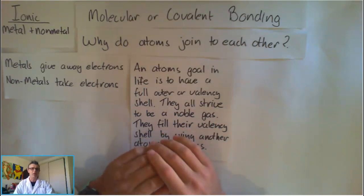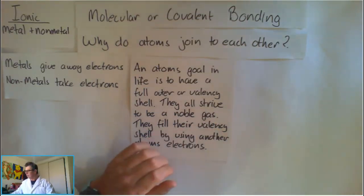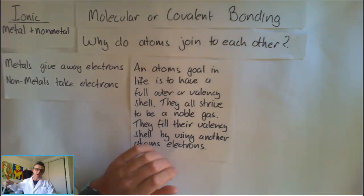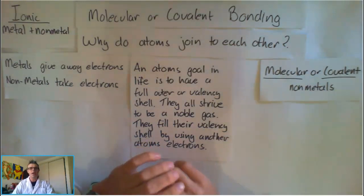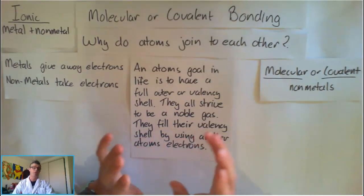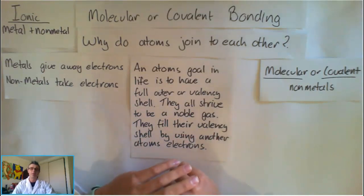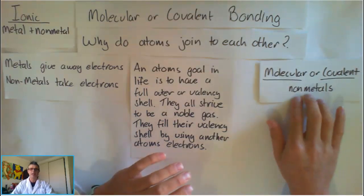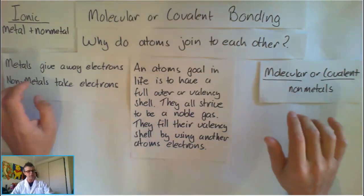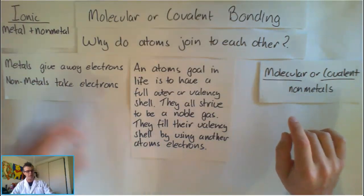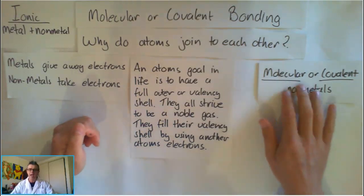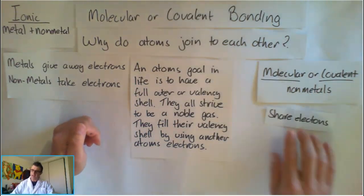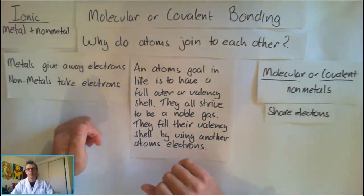So hence the reason it's called ionic bonding, because they are formed from ions. When we start looking at molecular or covalent bonding, it only happens between two nonmetals, or three nonmetals, or four nonmetals. So molecular or covalent bonding is between nonmetals. Now remember what I said about nonmetals - nonmetals take electrons on, they don't give them away. So how is this bond going to work? Well, they share electrons.